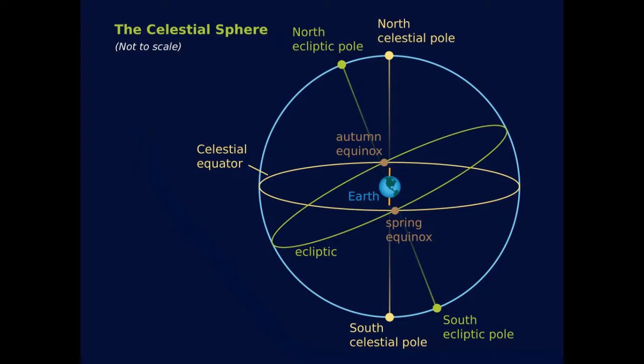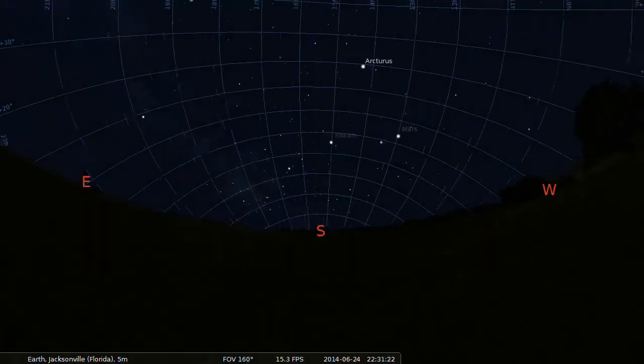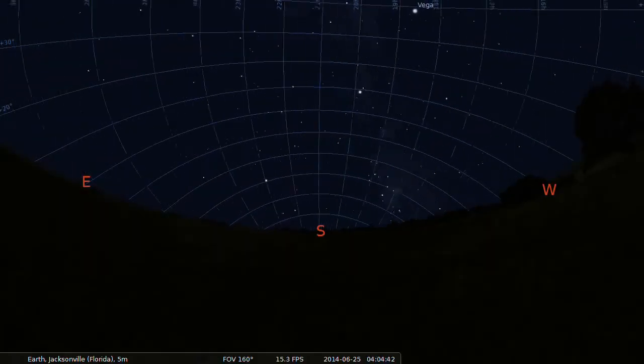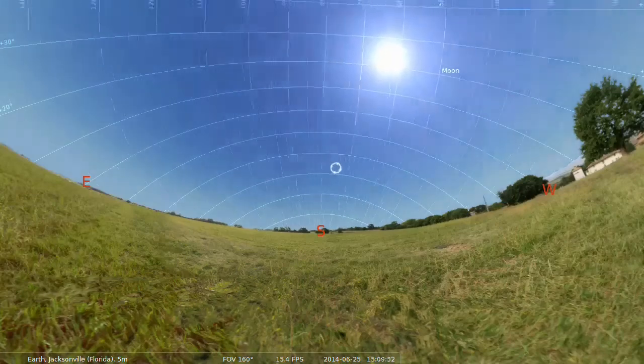These imaginary points are above the Earth's north and south poles, so all the stars, planets, moon, and sun on the celestial sphere also appear to move all the way around the sky once each day, rising in the east and setting in the west.